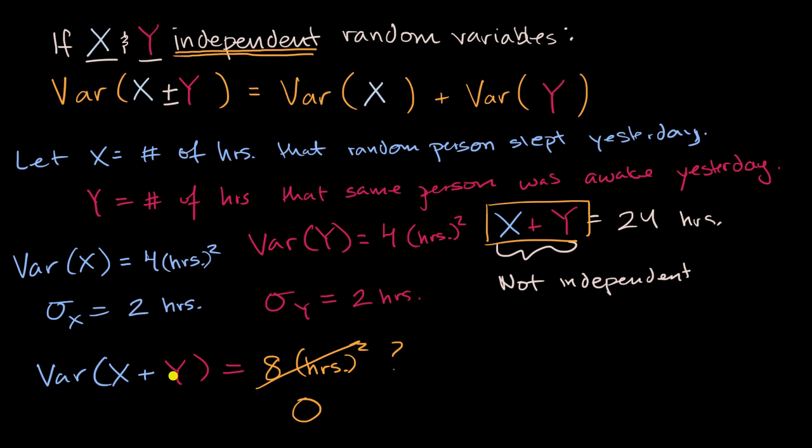X plus Y is always going to be 24, at least on Earth where we have a 24-hour day. So this is to give you a gut sense of why independence matters for making this claim, and if you have things that are not independent, it gives you a good sense for why this claim doesn't hold up.